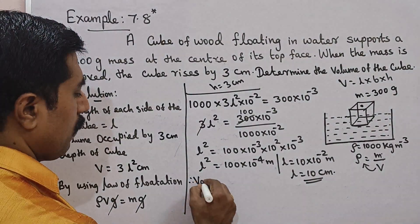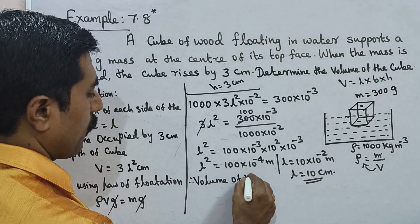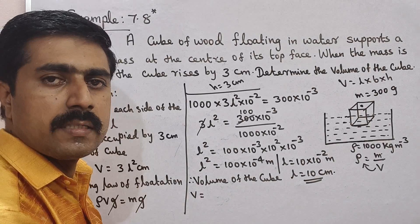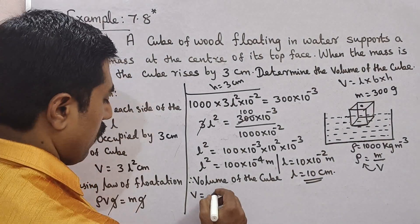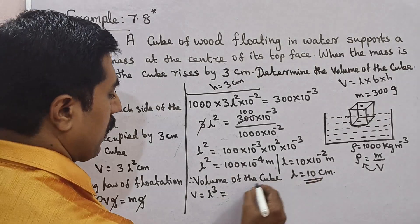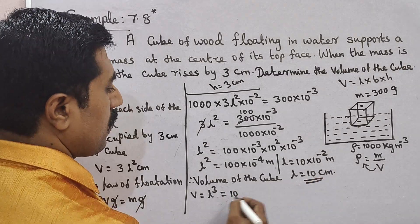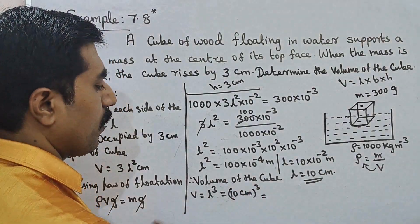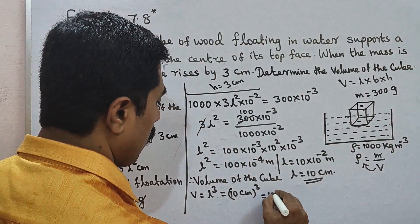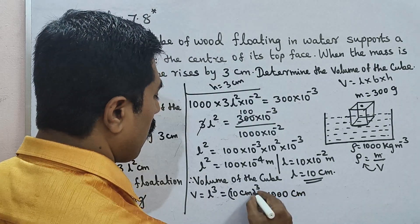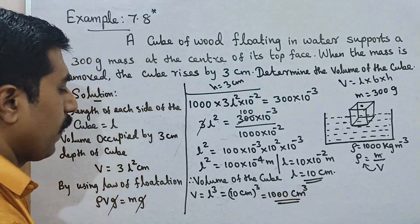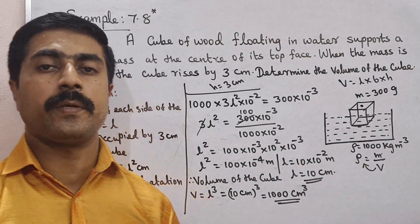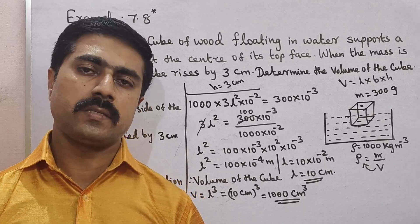Therefore, the volume of the cube: since all sides are equal to L, the volume equals L cubed. L equals 10 centimeters, so the volume equals 10 times 10 times 10 equals 1000 centimeter cubed. This is the volume of the cube. Very simple but very important — practice and share with friends. All the best, thank you!